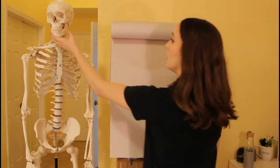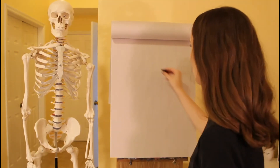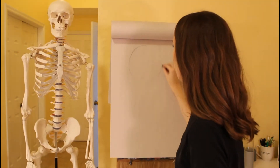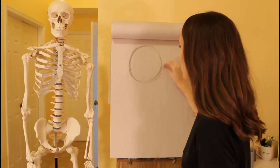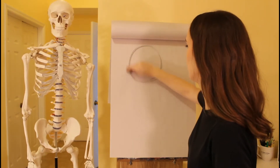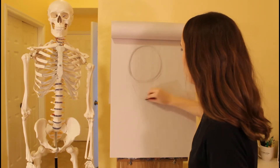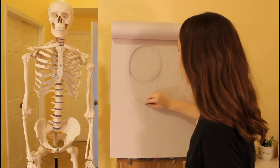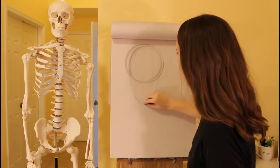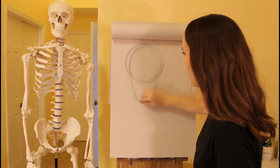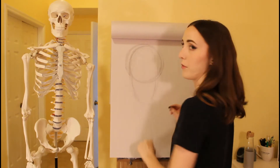So let's look at the skull — let's gesture a little bit. Gesturing a little sphere for the cranium, and then an oval for the face coming down from the cranium.